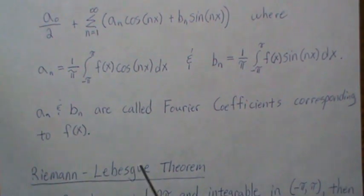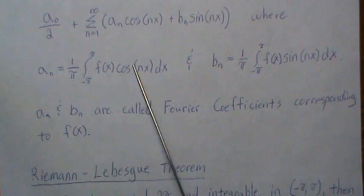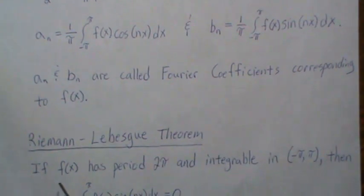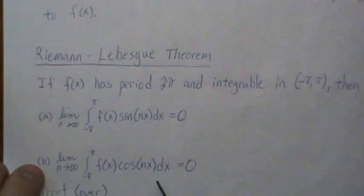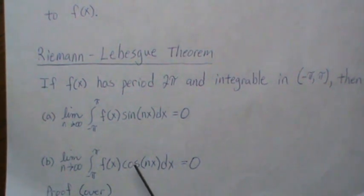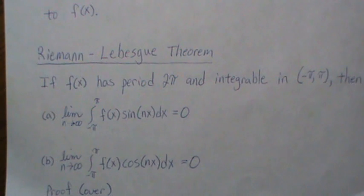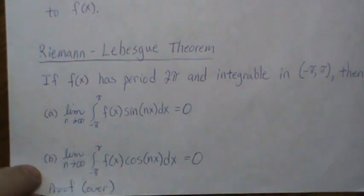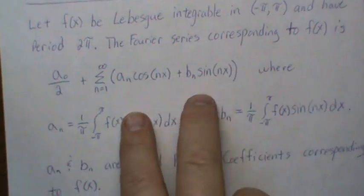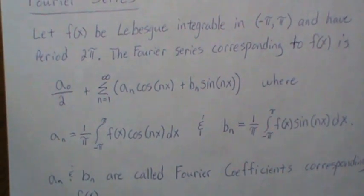Now what the Riemann-Lebesgue theorem deals with is the limiting value of these coefficients. So if f has period 2π and is integrable on this range, then the limiting value of the Fourier coefficients corresponding to f(x) limit to zero. That's a sufficient condition for the infinite sum to converge.